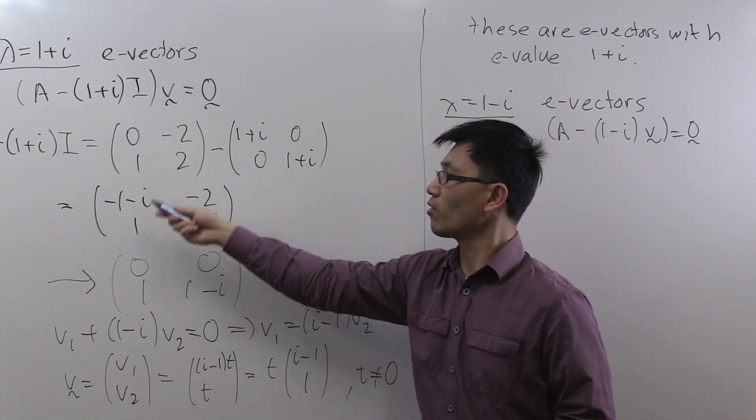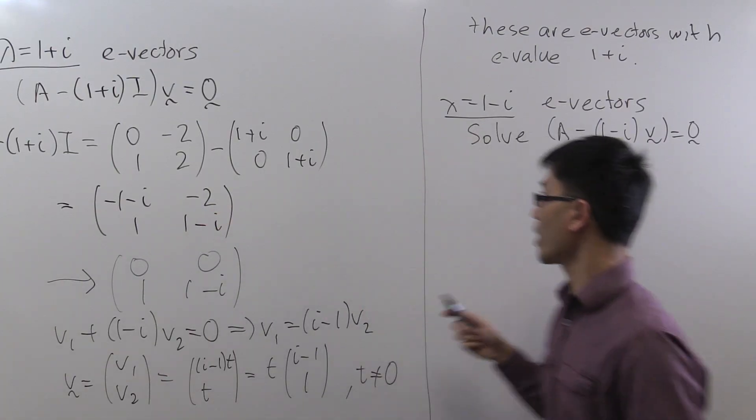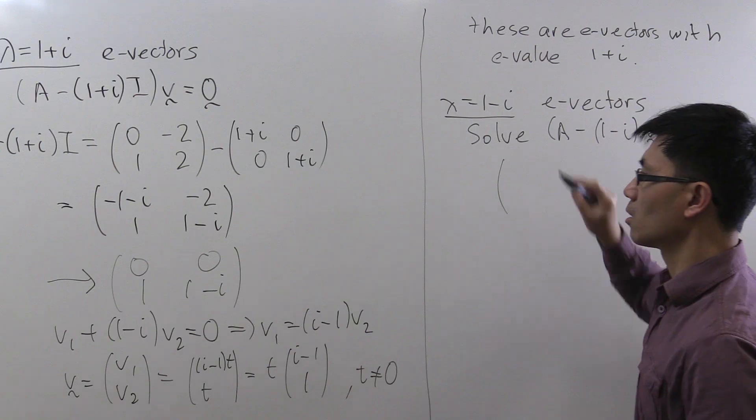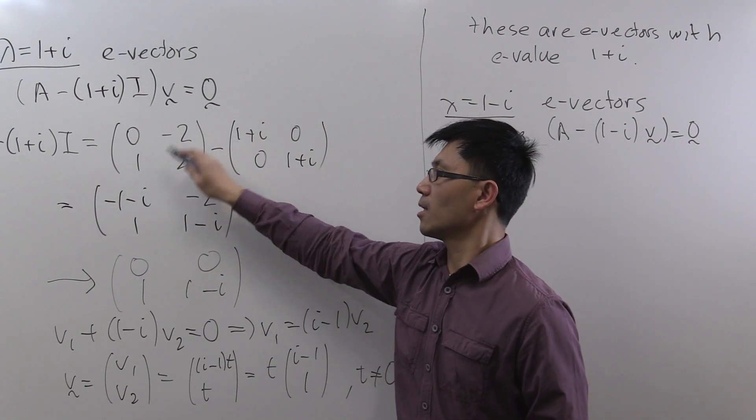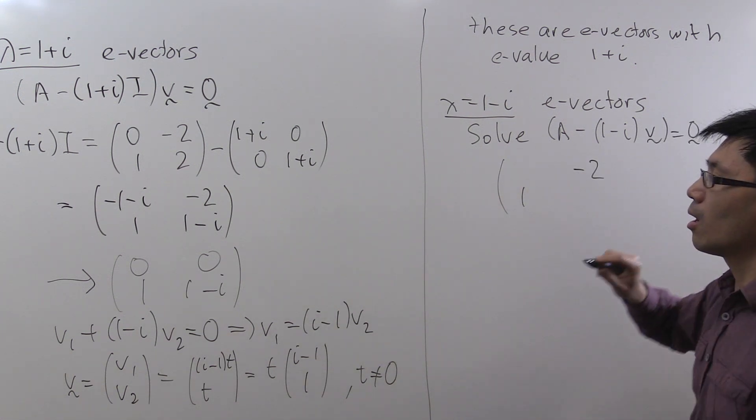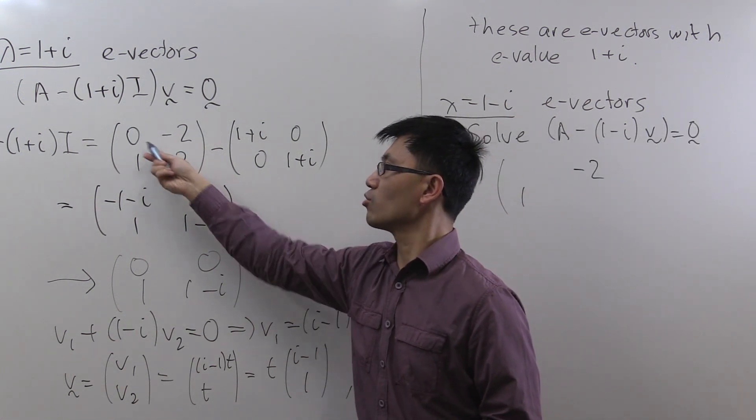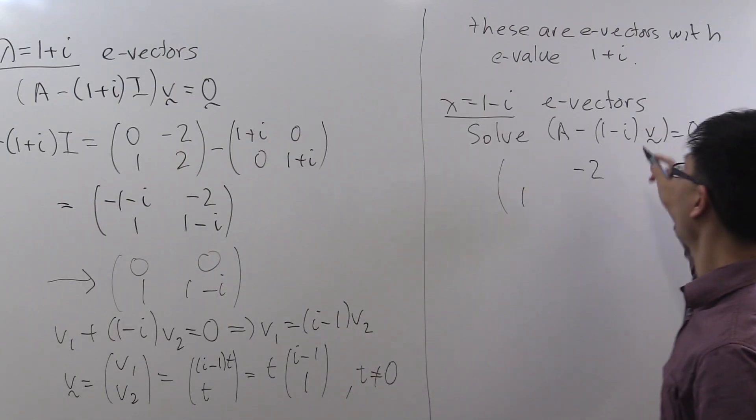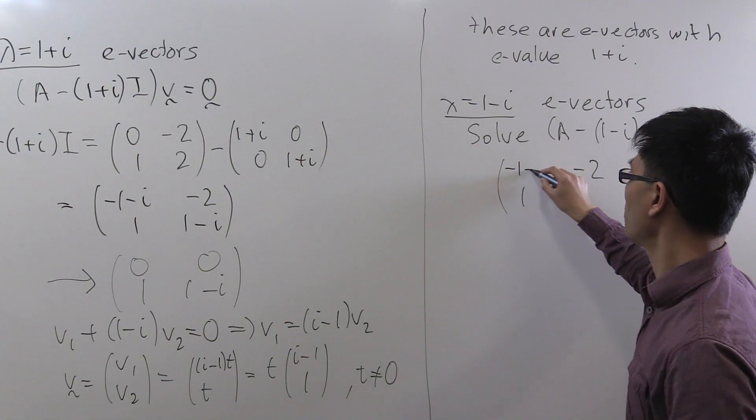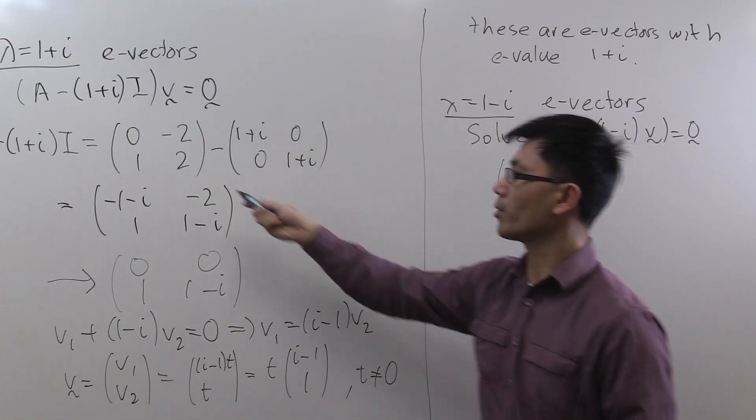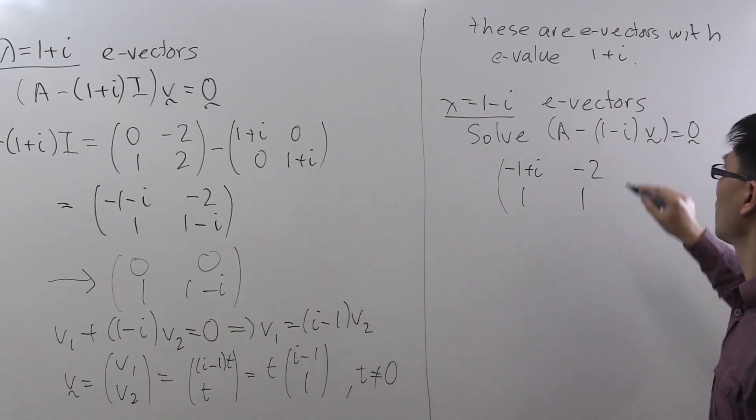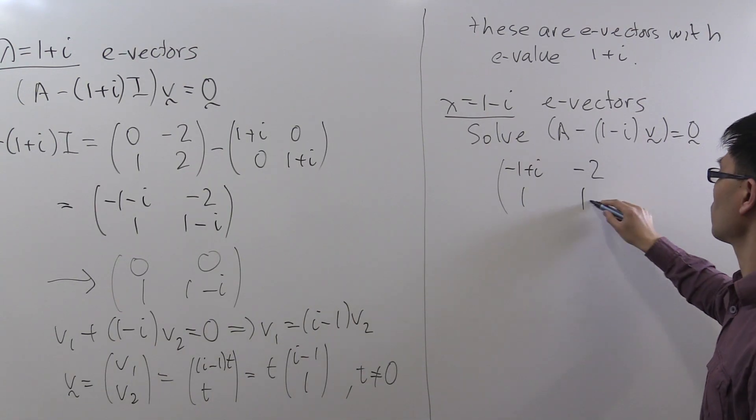So we look at the same sort of matrix except for we're subtracting a different eigenvalue here. So the off-diagonal elements are still the same, 1 and minus 2. But from the diagonal entries, 0 and 2, we subtract now 1 minus i. So we get the negative of this term, minus 1 plus i here, and we get 2 minus this term. So 2 minus 1 is 1, and then subtracting the minus i gives you plus i.